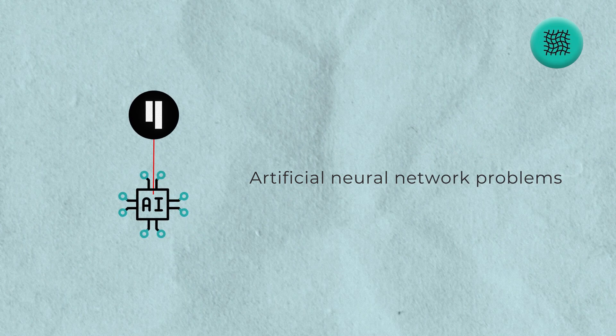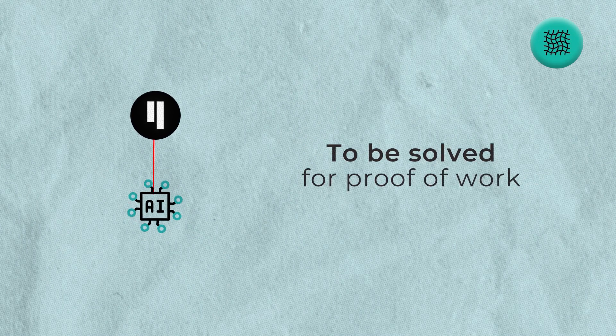So if you take a step back and you think about it, what's actually happening is this. Qubic requires artificial neural network problems to be solved for proof-of-work, and they do that by paying their super nodes to solve it on their behalf. But those super nodes can partner with miners all around the world to distribute them out.